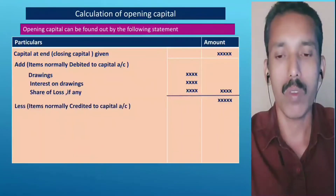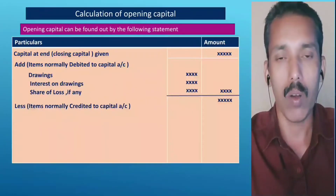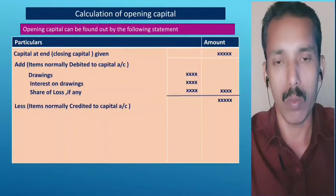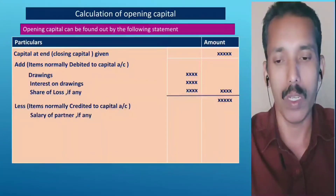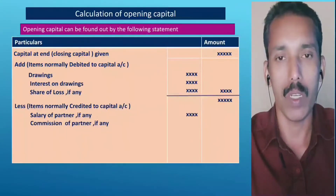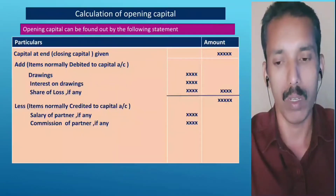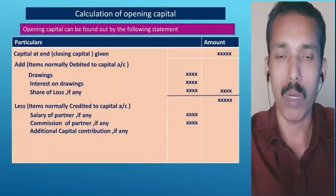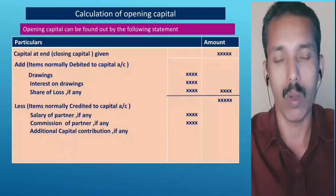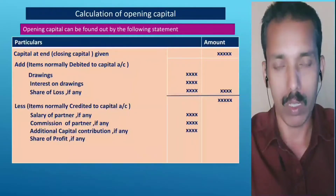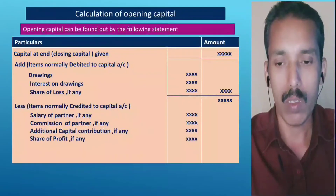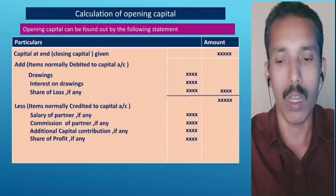Less items — items normally credited to the capital account — include: salary of partner, commission of partner. These appropriation items are to be deducted.